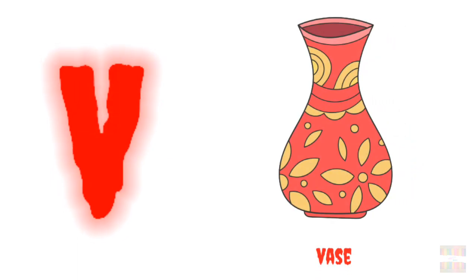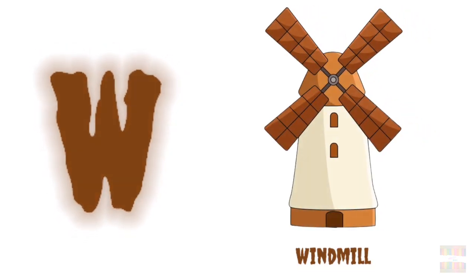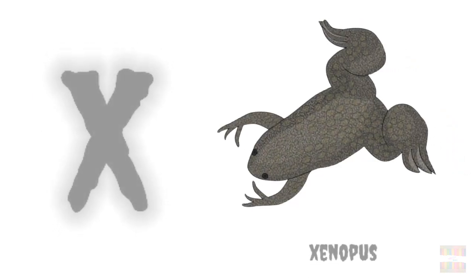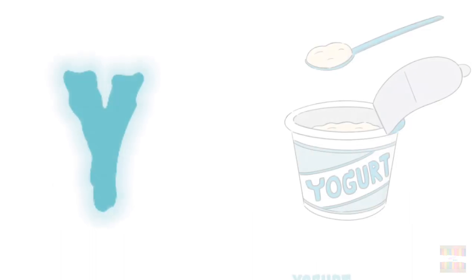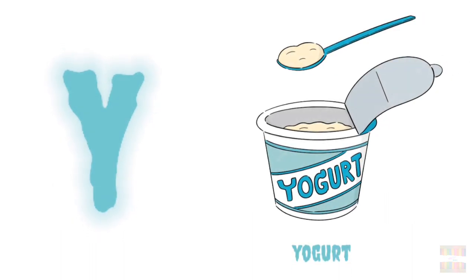V for Vase, W for Windmill, X for Xenopus, Y for Yogurt.